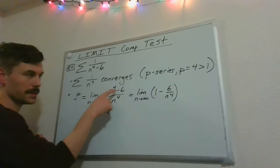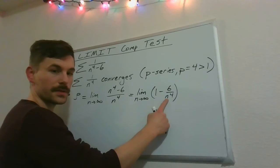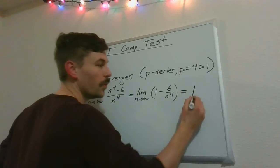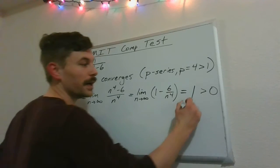So I can split this up. Well, as n gets really large, this fraction 6 over n to the 4th gets really small, so this limit's going to go to 1. So 1 is definitely positive, but also it's finite.